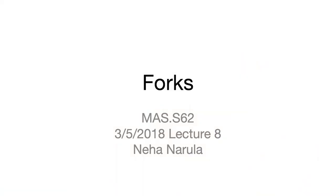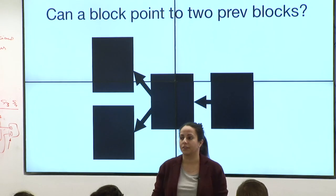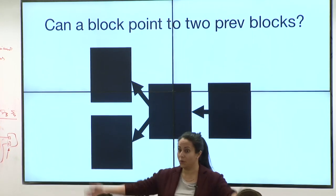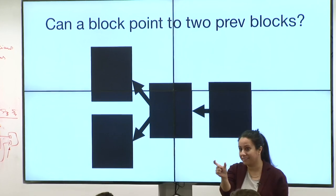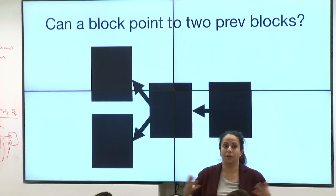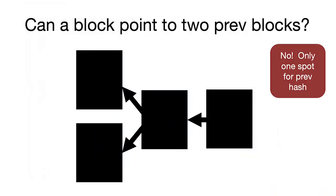Feel free to raise your hands and ask questions during class because this stuff is actually kind of non-intuitive sometimes. A blockchain is a chain of blocks which have previous hash pointers inside of them. Can a block point to two previous blocks at the same time? No, exactly — that is the whole point. There is exactly one spot in the block header for a previous hash block, so a block can only point to one previous block.